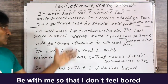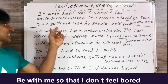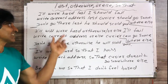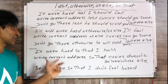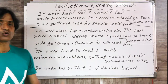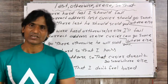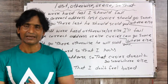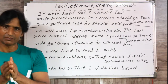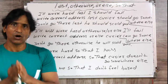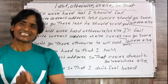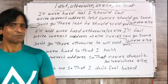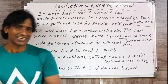Okay friends, so those were all our sentences. The first three were 'lest', the second three were 'otherwise/or else', and the last three were 'so that'. Now you understand which type of sentences use 'lest', which use 'so that', and which use 'otherwise/or else'. Thanks a lot and dhanyavaad.